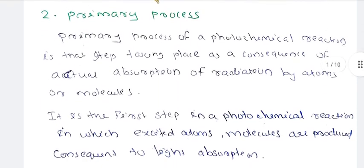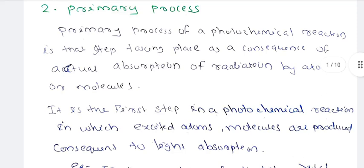The primary process of a photochemical reaction is a step taking place as a consequence of actual absorption of radiation by atoms or molecules. It is the first step of a photochemical reaction.